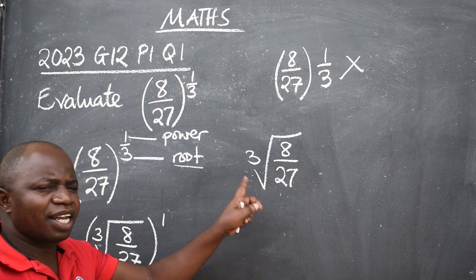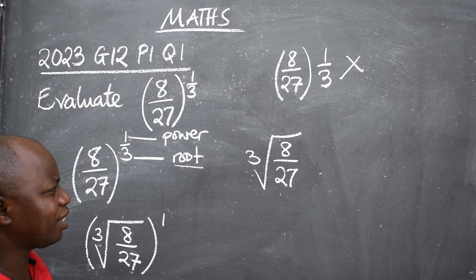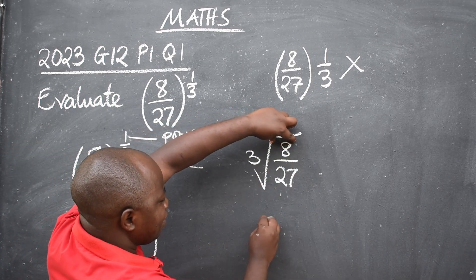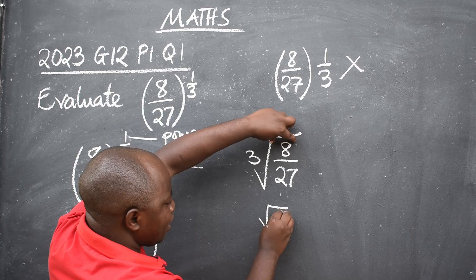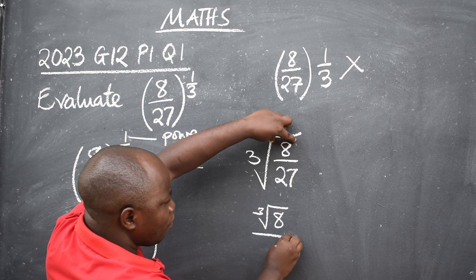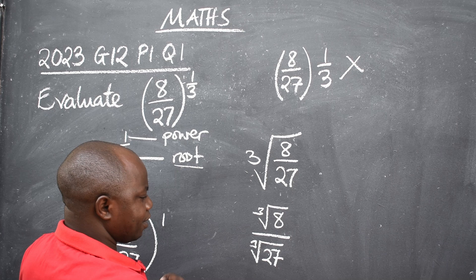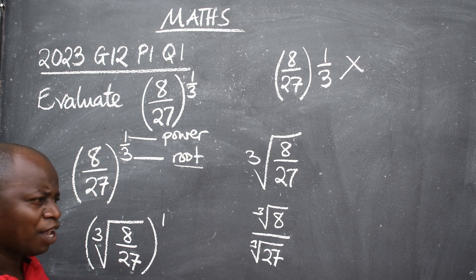What will be that? You are going to separate. Which will be cube root of 8. Write it this way: cube root of 8 over cube root of 27. Like this. What next?